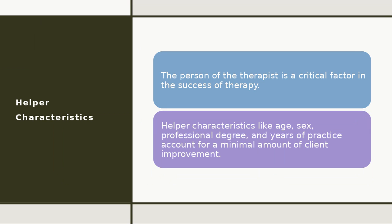We also need to keep in mind the helper characteristics that will influence your selection of an intervention. As we've stated over and over this semester, the person of the therapist is a critical factor in the success of therapy. However, helper characteristics like age, sex, professional degree, and years of practice account for a very minimal amount of client improvement. This suggests that a therapist with a doctoral degree is no more effective than a therapist with a master's degree, and that years of practice experience don't really have a major influence on client improvement.